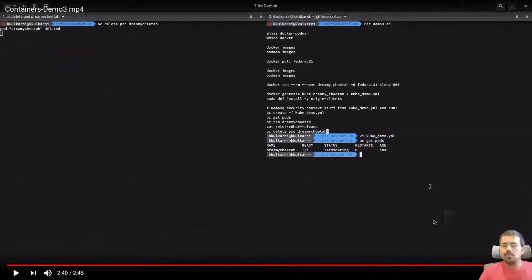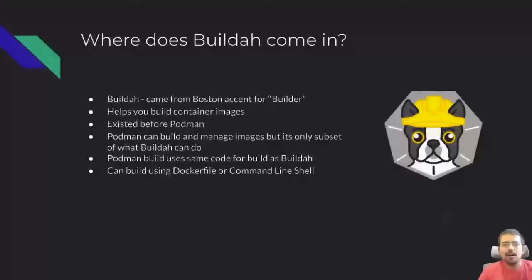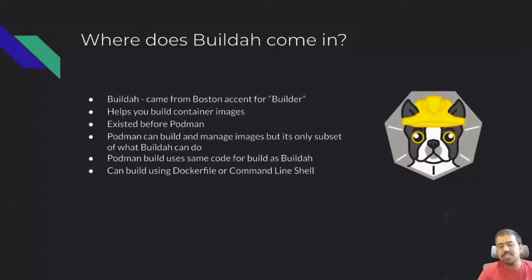We saw how Docker and Podman work, with three different demos of commands and options. Now there are some other technologies as well — Buildah and Skopeo. Buildah, named from the Boston accent pronunciation of 'builder', is a tool that builds Docker or OCI container images. You might ask: wouldn't Podman be able to build images? Yes, Podman can build images, but Buildah was created specifically just for building images. Buildah was created before Podman.